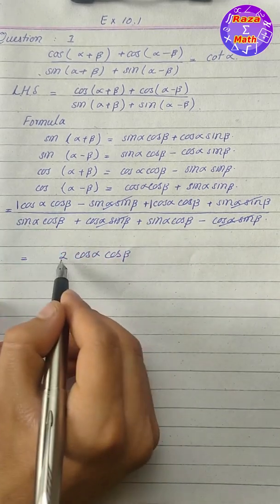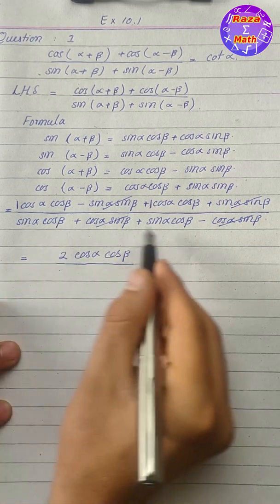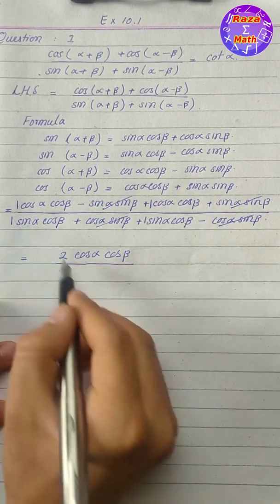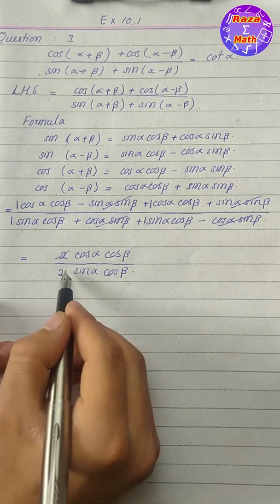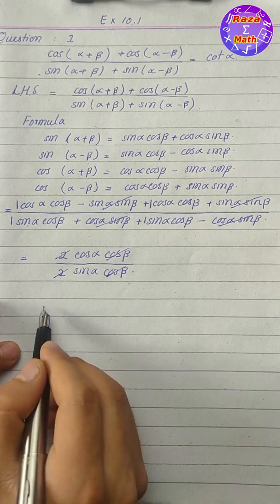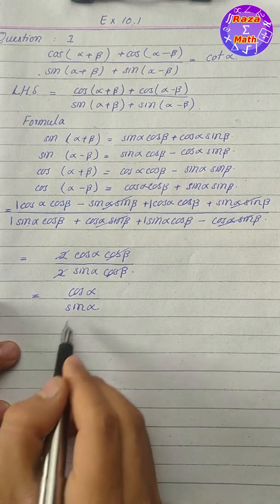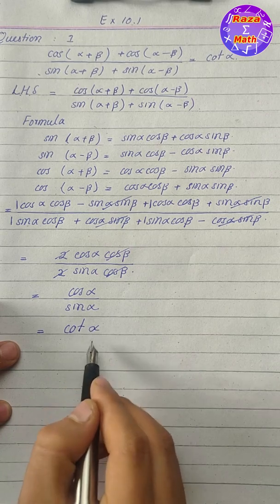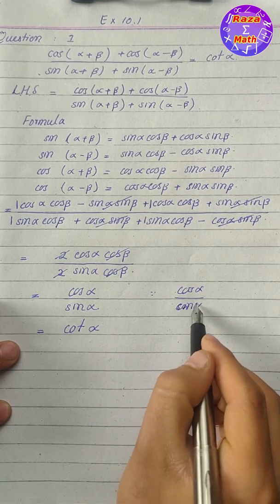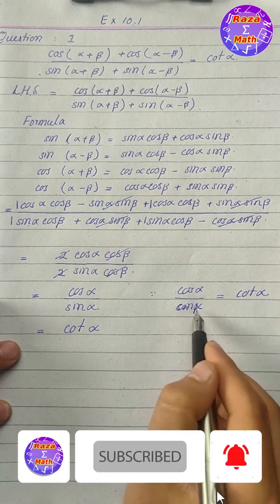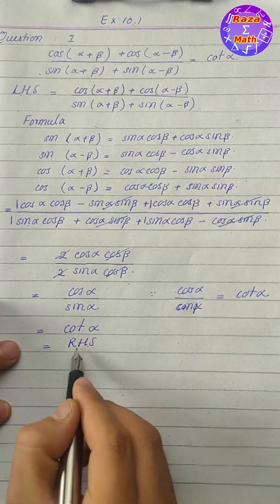Now we can see that the sine alpha sine beta terms cancel in the numerator, leaving 2 cosine alpha cosine beta. Similarly, the cosine alpha sine beta terms cancel in the denominator, leaving 2 sine alpha cosine beta. Dividing, cosine beta cancels, giving cosine alpha divided by sine alpha, which equals cotangent alpha. This equals the right hand side, hence proved.